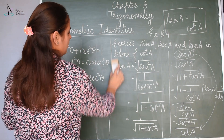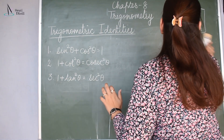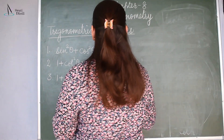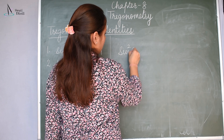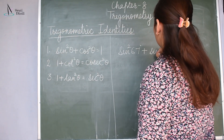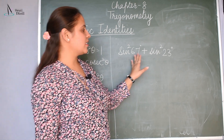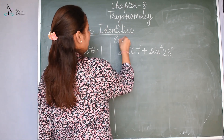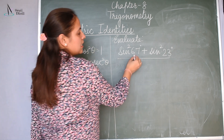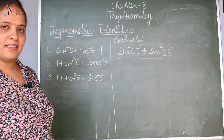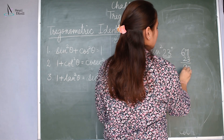Now let us discuss one more question. You are given: sin square 67 degrees plus sin square 23 degrees. You need to evaluate or find the value of this expression. Notice that 67 and 23, when added, become 90 degrees, since 67 plus 23 equals 90 degrees.